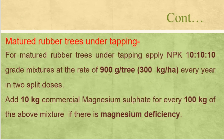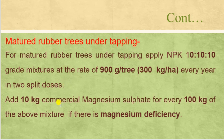For mature rubber trees under tapping, apply NPK 10:10:10 grade mixture at the rate of 900 grams per tree, which is 300 kg per hectare, every year in two doses. Add 10 kg of commercial magnesium sulfate for every 100 kg of the above mixture if there is magnesium deficiency.